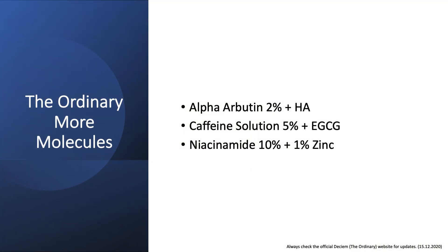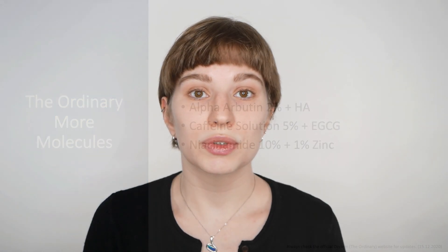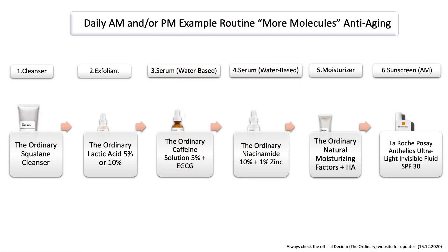Now I want to get into the category of more molecules, which includes alpha arbutin, caffeine solution, and niacinamide. You are fine to use niacinamide with lactic acid—niacinamide serums have no issues with any exfoliating acids. In an example routine, you would start with your cleanser, use your lactic acid, then use your caffeine solution if you suffer from dark circles or puffiness, move on to niacinamide, your moisturizer, and sunscreen in the morning. This could also be a great anti-aging skincare routine.